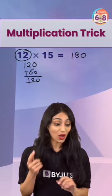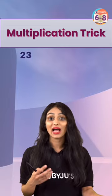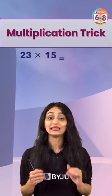Now, 12 was an even number. What if we have an odd number with us? Let's suppose we have 23 times 15, tab kaise karenge?